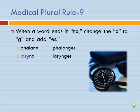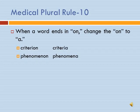Our next medical plural rule: when a word ends in N-X, change the X to G and add ES. Phalanx becomes phalanges; larynx is singular, larynges is plural. Our next rule: when a word ends in O-N, change the ON to A. The criterion becomes criteria; phenomenon becomes phenomena. Go ahead and stop the presentation and do self-study 9-6 to review the last few rules we've learned.